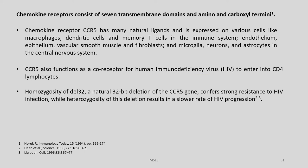Homozygosity of del32, which is a natural 32 base pair deletion of the CCR5 gene, confers strong resistance to HIV infection, while heterozygosity of this deletion results in a slower rate of HIV progression. A person having a homozygous phenotype of this del32 mutant will be naturally resistant to HIV. About 1% of the Scandinavian population carries this mutation and they are naturally immune to HIV.